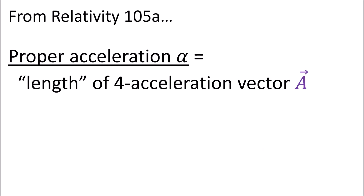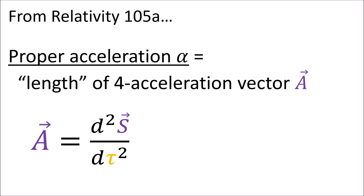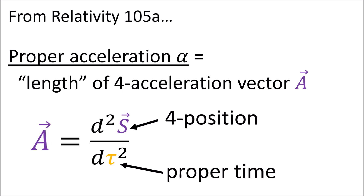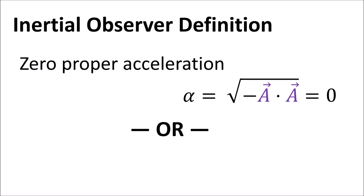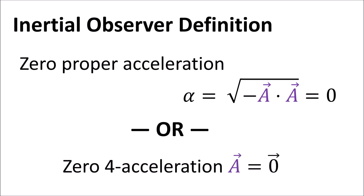As explained in Relativity 105 part A, the proper acceleration is basically the length of an observer's four-acceleration vector a, which is the second derivative of their four-position vector s with respect to proper time tau. So we can define an inertial observer by saying their proper acceleration alpha is zero, or by saying their four-acceleration vector a is the zero vector. Both of these definitions are equivalent.